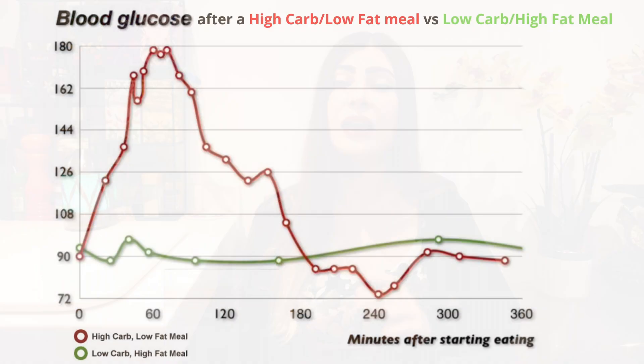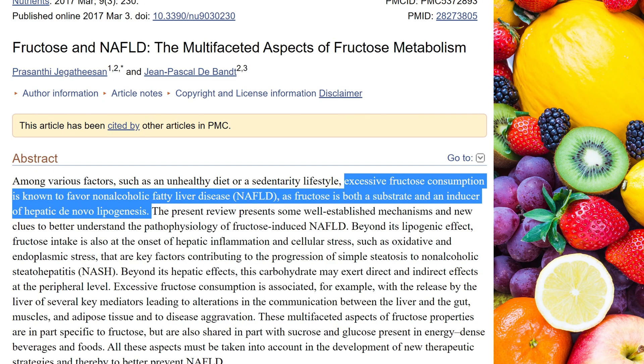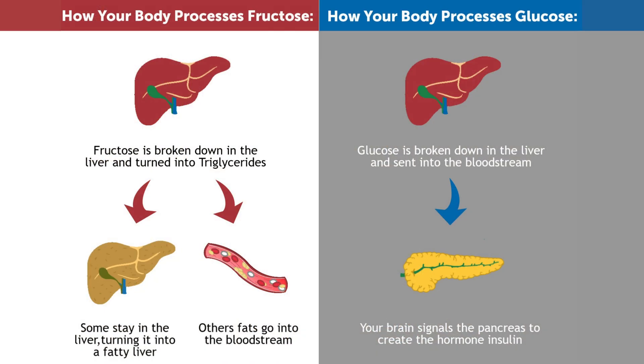Because eating dietary carbohydrates results in high glucose and insulin, while basing your diet on fat results in low glucose and insulin. And then NHS recommends eating fruits — really, fruits — that are high in fruit sugar fructose, which is known to cause insulin resistance and fatty liver. Researchers say excessive fructose consumption is known to favour non-alcoholic fatty liver disease, as fructose is both a substrate and an inducer of hepatic de novo lipogenesis. In other words, fructose is turned into fat and it accumulates in the liver.